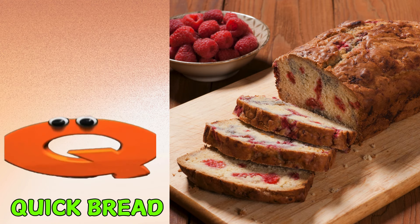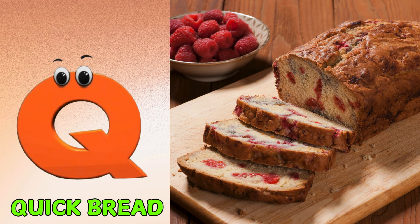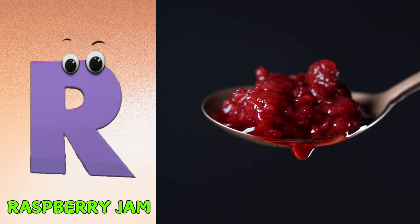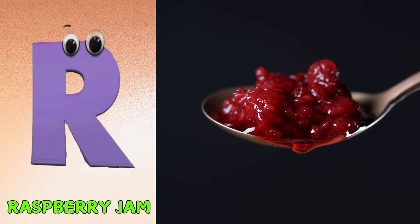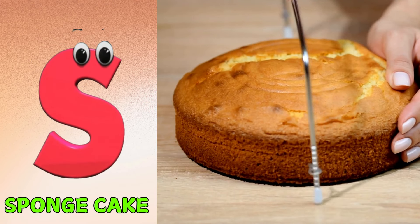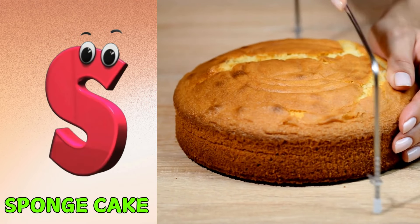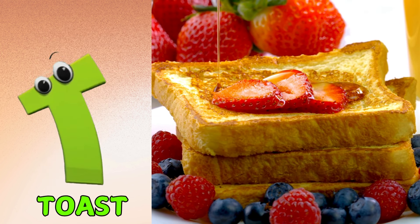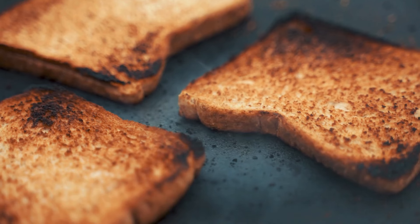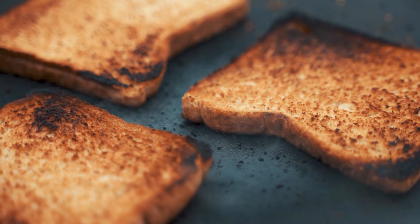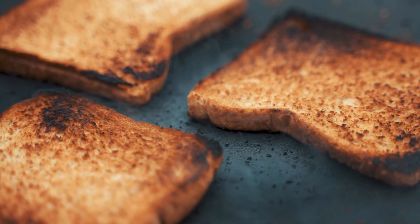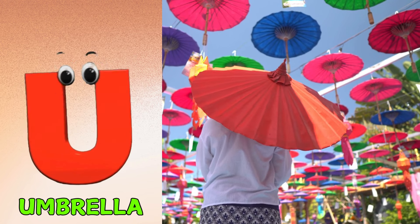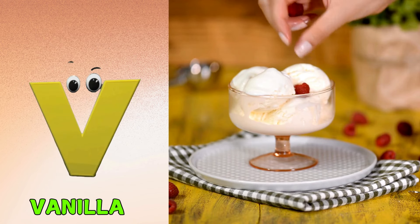Q is for Quick Bread. Quick Bread. R is for Raspberry Jam. Raspberry Jam. S is for Sponge Cake. Sponge Cake. T is for Toast. Toast. U is for Umbrella.